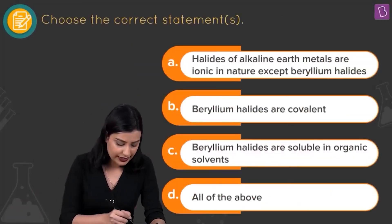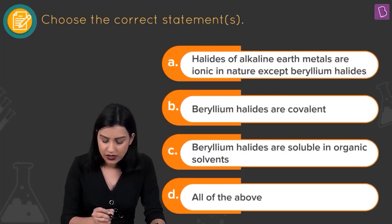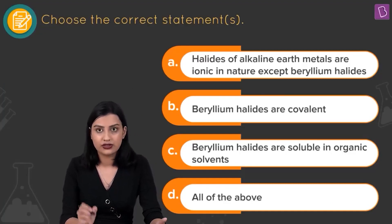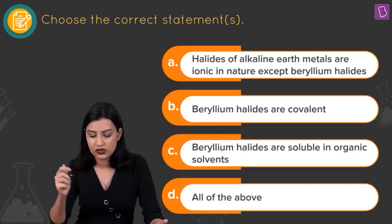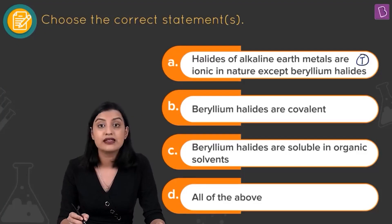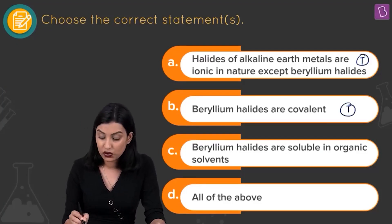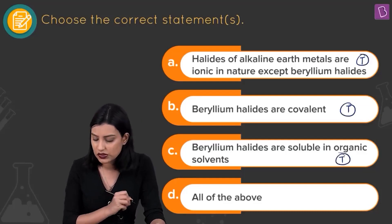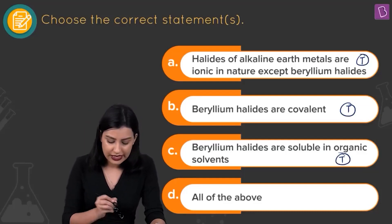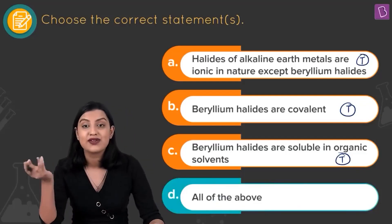So: halides of alkaline earth metals are ionic except beryllium halides — true. Beryllium halides are covalent — true. Beryllium halides are soluble in organic solvents — true. All three statements A, B, and C are correct, so option B — all of the above — is the right answer.